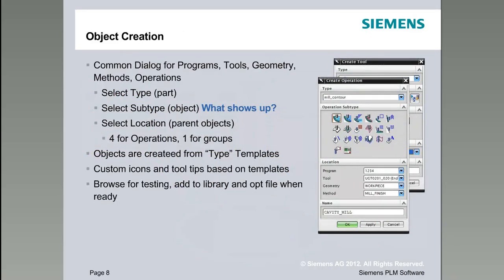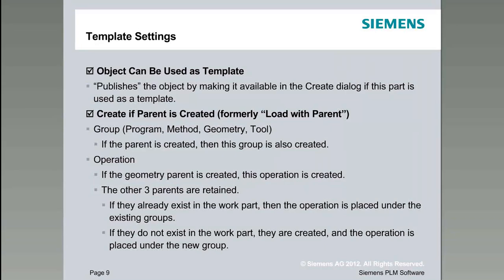When we go to create something and we open the create dialog for an operation or a tool, this type is actually the part file where the templates are coming from, and the subtype is what's available. The question is, what shows up? There are many more operations in this template than what you see, and that's what the template setting does. Also note that when you do create an operation, you have to specify the four parent groups — those are what the locations are. When we have a template and an object in it, we have what we call template settings, and there are two. The first one is that an object can be used as a template, meaning this object will show up in the create dialog. That's what determines whether it shows up as an icon when you go to create operation, create tool, or create geometry.